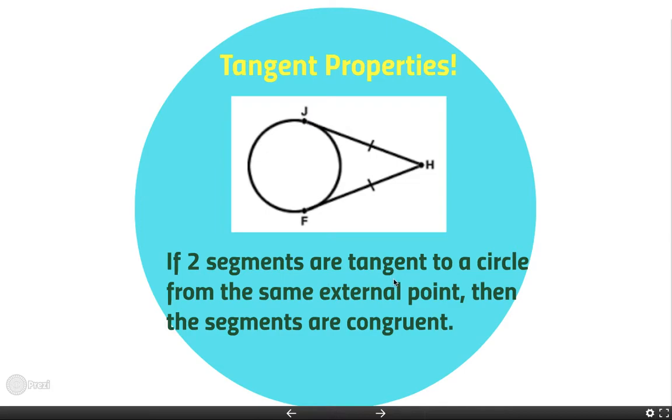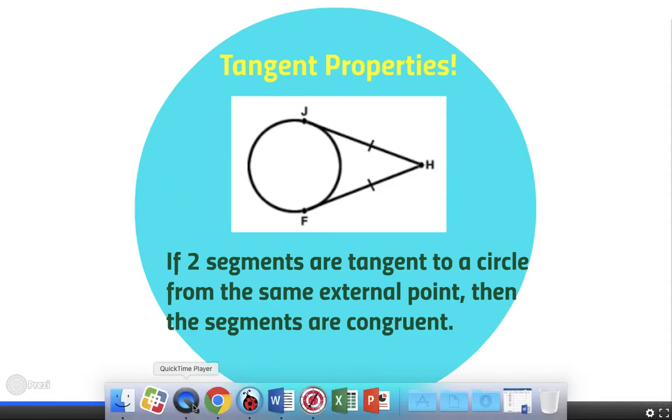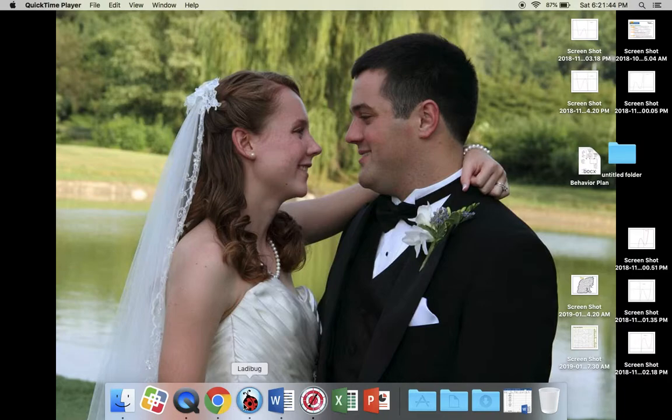We're going to be using the property that states if two segments are tangent to a circle from the same external point, so if two tangents come from the same point outside of the circle and are tangent to the circle, that means they're congruent. These two are tangent segments, they both intersect in point H which means they have to be congruent, so be on the lookout for this property.